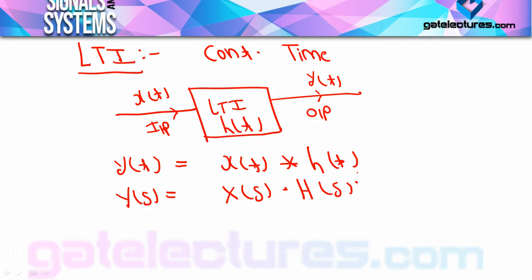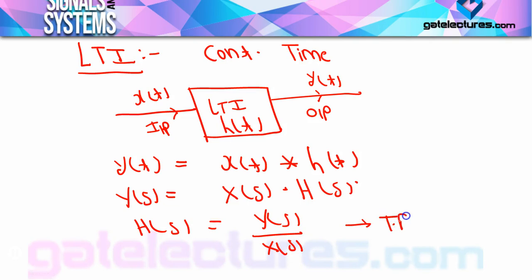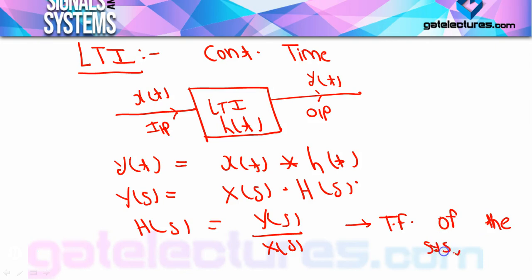If I extend this analysis further, H(s) becomes Y(s) divided by X(s). This H(s) that we derived is called the transfer function of the system. So the definition of transfer function of the system is: Laplace transform of output, that is Y(s), divided by Laplace transform of input, that is X(s), with all initial conditions equal to zero. Simply put, Y(s) upon X(s) is your transfer function of the system.